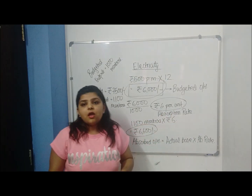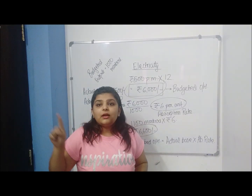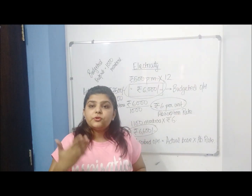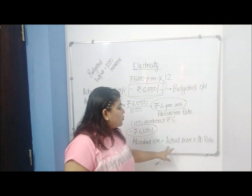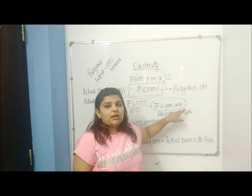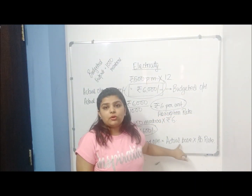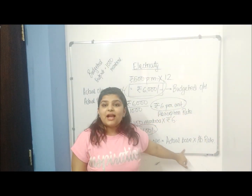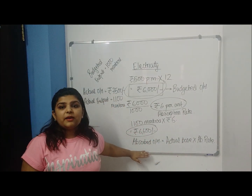For example, you would have seen in some cost sheets: factory overheads at 30% of direct wages. That 30% of direct wages is also an absorption rate. So if it is on the basis of hours, you take actual hours; if it is per unit, you take actual units; if it is a percentage of some cost — material cost, labour cost, etc. — you take the actual cost. So this is my absorbed overheads.